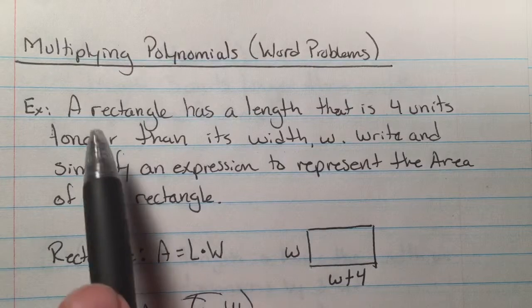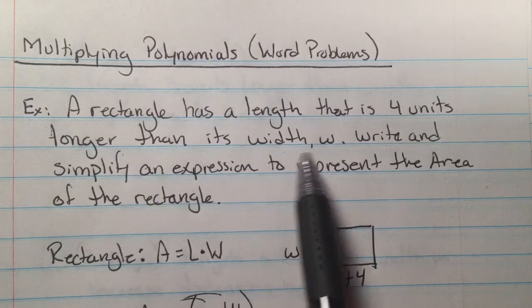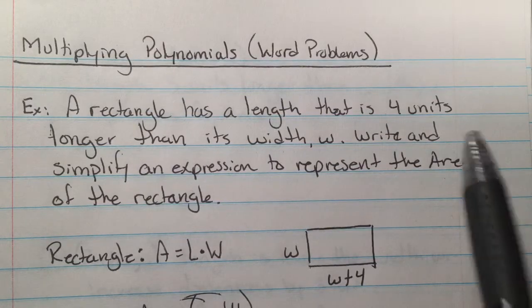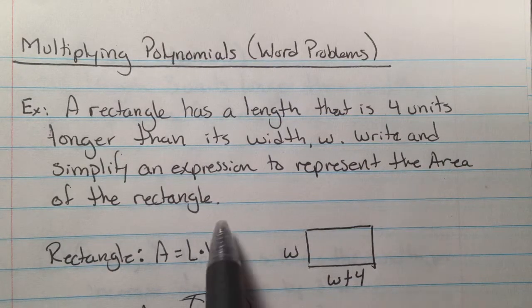So here we have, a rectangle has a length that is four units longer than its width, w. Write and simplify an expression to represent the area of the rectangle.